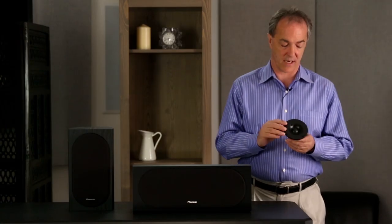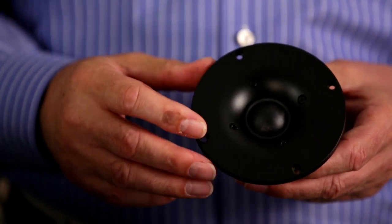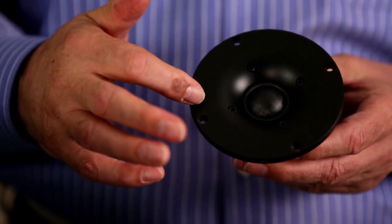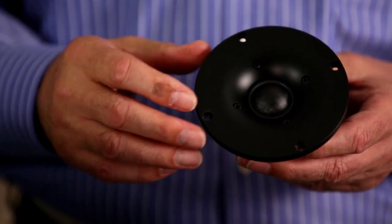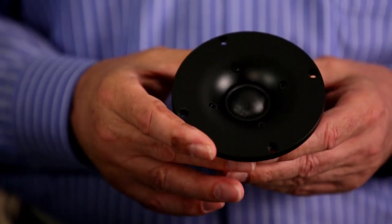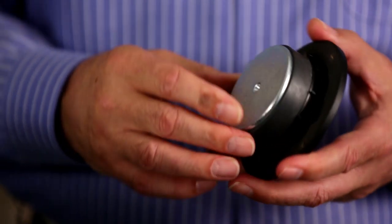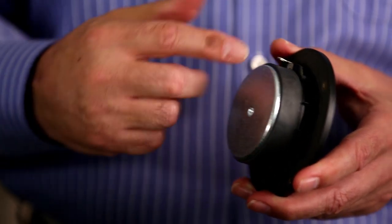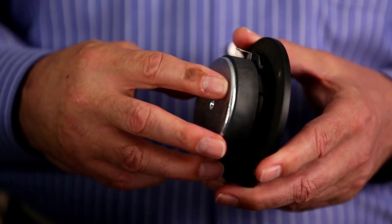For the tweeter, again, many changes. New dust dome material, new waveguide shape to get better off-axis performance and matching to the mid-range. And a much larger magnet. This gives us greatly improved sensitivity of the tweeter, so we don't get as much thermal compression at high volumes.